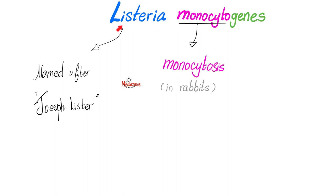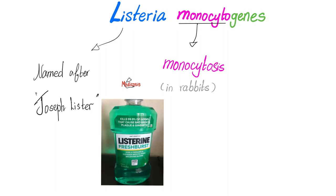Why did we call it Listeria monocytogenes? Listeria is named after the famous Joseph Lister. The famous Listerine mouthwash is also named after Joseph Lister. Monocytogenes because Listeriosis, as a disease, causes proliferation of monocytes, or monocytosis, in rabbits.